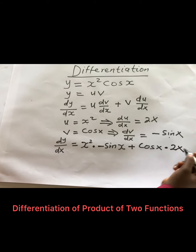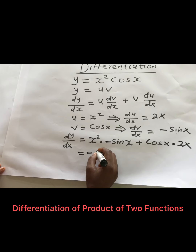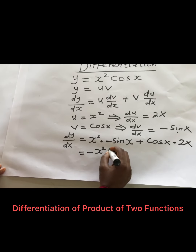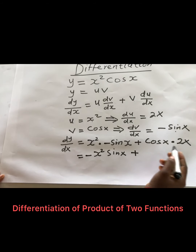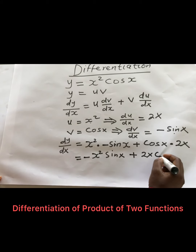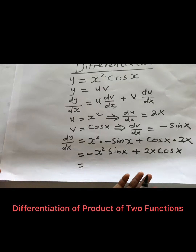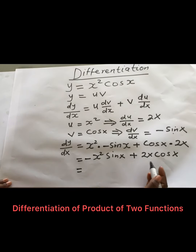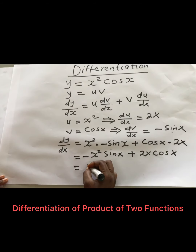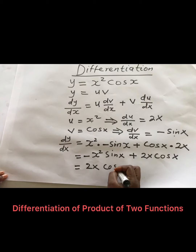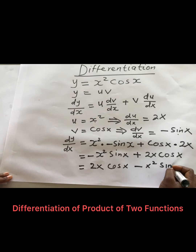Now let's multiply out. I'll have minus X squared sin X, plus 2X cos X. I'll rearrange, taking the positive term to the front and the negative to the back, giving us: 2X cos X minus X squared sin X.